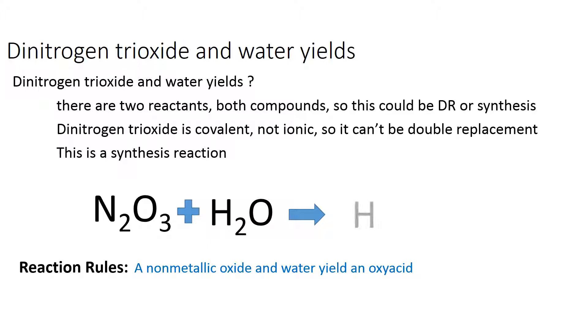An oxyacid, being an acid, starts with H. We need to have a polyatomic ion after that. Obviously, since there's no other nonmetal here, we need to have nitrogen and some oxygens, but we don't know how many.